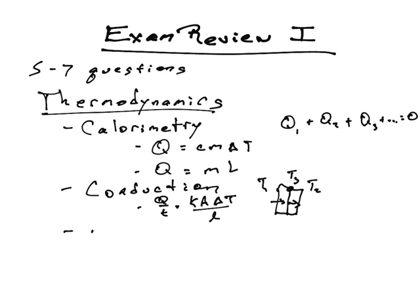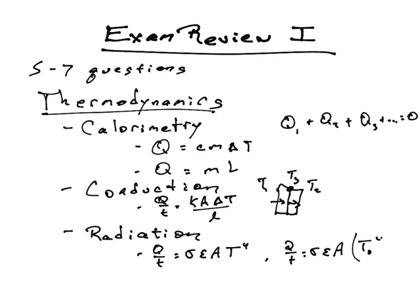Then we had radiation, which also dealt with the heat transfer rate, but this is a heat transfer rate due to radiation. And this equation, Q over t, is sigma epsilon A T to the fourth, or Q over t is sigma epsilon A times T object to the fourth minus T environment to the fourth.